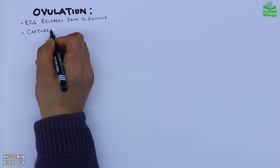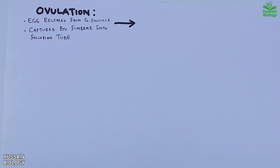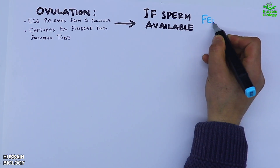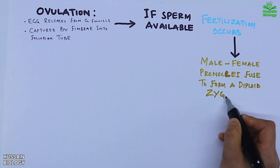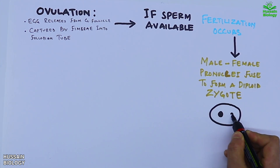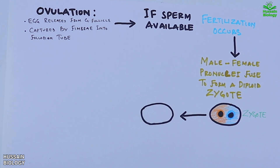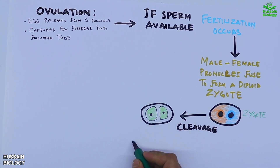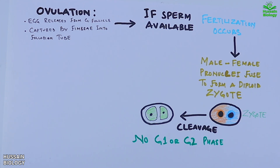Furthermore, getting into the details, we see first we have ovulation where the egg is released by the Graafian follicle and captured by the fimbriae into the fallopian tube. Then if sperm is available we get the fertilization process, where male and female pronuclei fuse to form a diploid zygote. From here cleavage starts — the zygote is first cleaved into two cells. It must be noted that there is no G1 or G2 phase, meaning all mitotic divisions do not change the cytoplasmic volume.